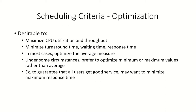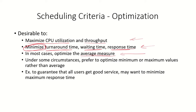To optimize scheduling criteria, we want to maximize CPU utilization and maximize throughput — the number of processes completing execution per unit time. We want to minimize turnaround time, waiting time, and response time. In most cases we optimize the average measure, computing these for all processes and taking their average. But in some circumstances we might prefer to optimize the minimum or maximum values rather than the average.